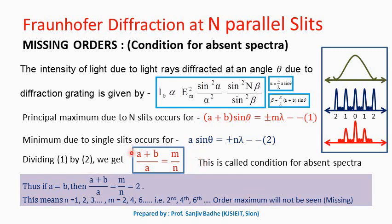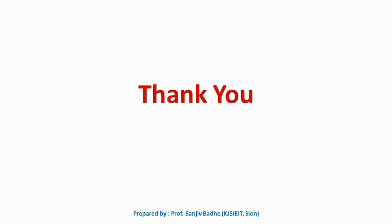The condition for absent spectra is (A + B)/A = m/n. Thank you for watching this video. If you like this video, please subscribe to the channel so that you will get timely notification of new videos uploaded. Thank you very much.